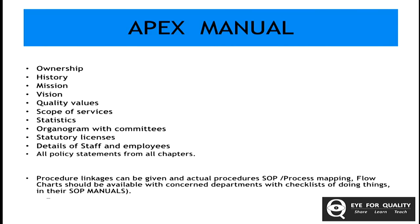Let's start from the APEX manual — that's supposed to be the Bible. When a new staff enters your organization, if you have an APEX manual, everything a person should know about your organization is there: the ownership, history, mission, vision, quality values, scope of services, statistics, organogram, the level of hierarchy which exists in your organization, statutory licenses, details of the staff and employees, and all policy statements from all chapters.